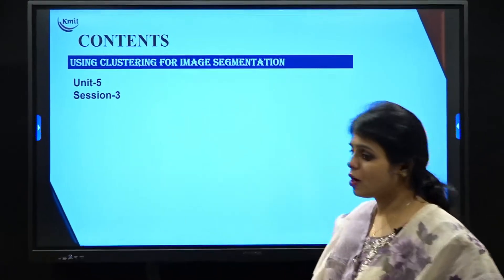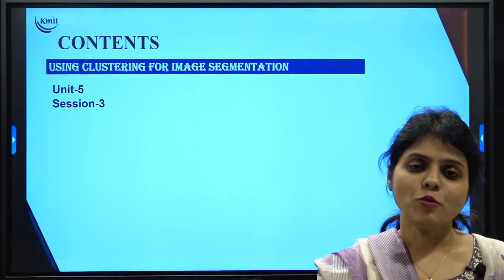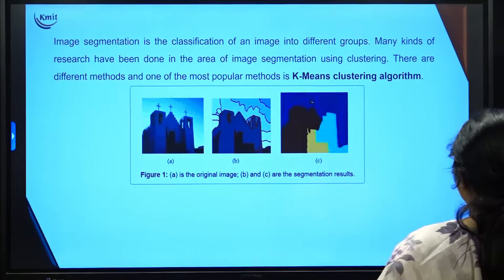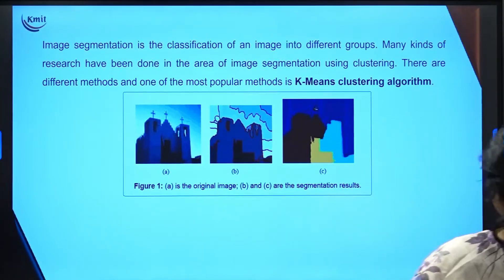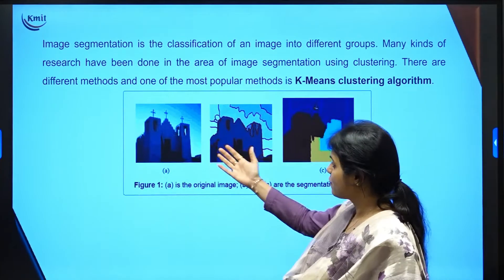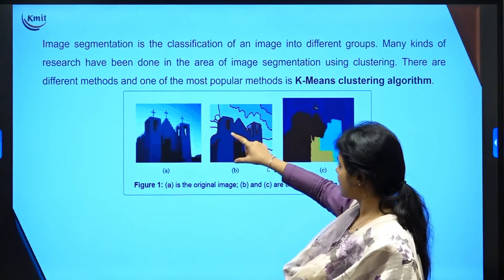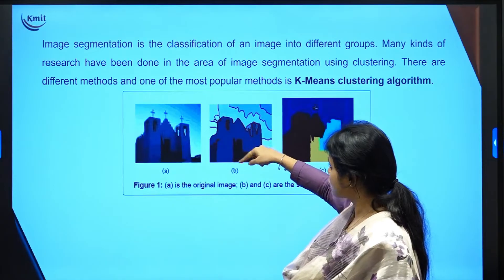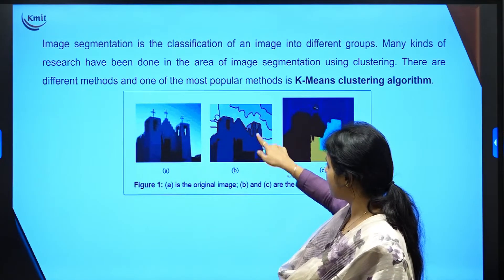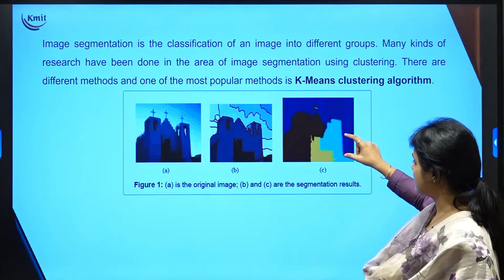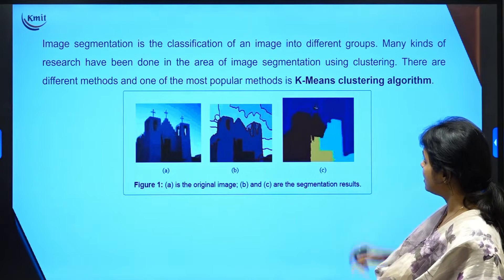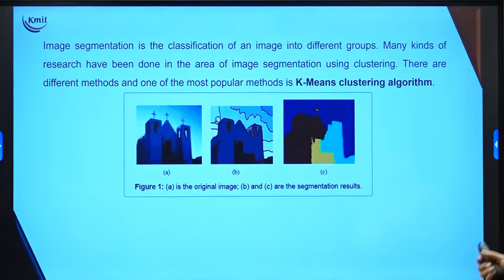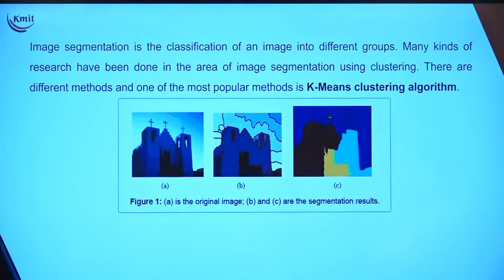Today in the session I would like to talk about how and why we use clustering for one important aspect of deep learning or machine learning, which is image segmentation. When I talk about image segmentation, it is nothing but the classification of the image into different groups. As you can see in the picture, we have different types of segmentations being done — classifying an image into the clouds, the upper part of the sky, and the building structure. Many kinds of research have been done on image segmentation using clustering because clustering gives a clear understanding of the image.